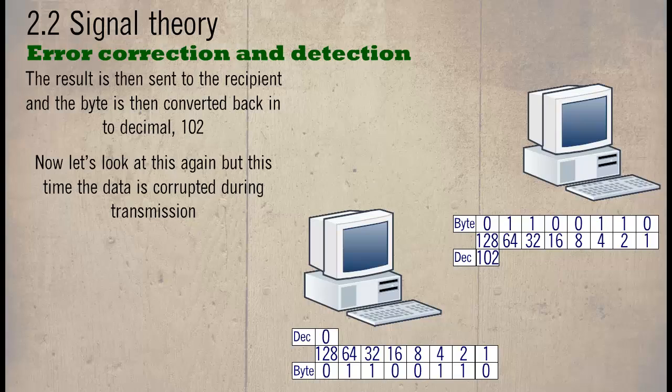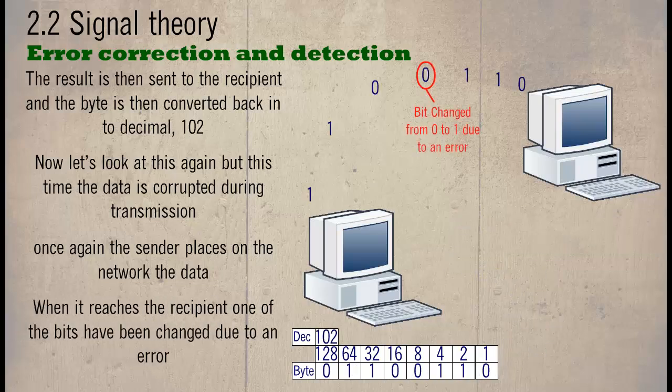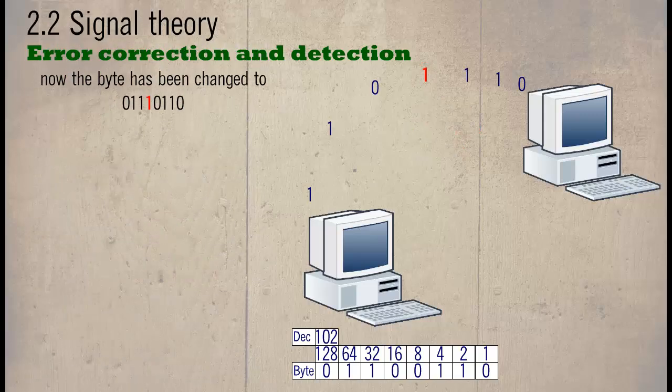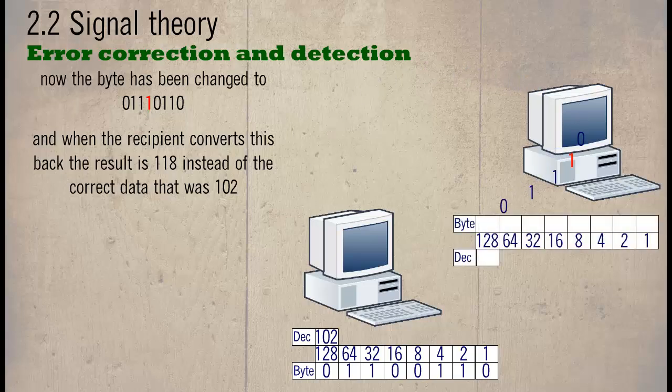Now let's look at this again, but this time the data is corrupted during transmission. Once again the sender places on the network the data. When it reaches the recipient, one of the bits has been changed due to an error. Now the byte has been changed to 01110110. When the recipient converts this back, the result is 118 instead of the correct data that was 102.